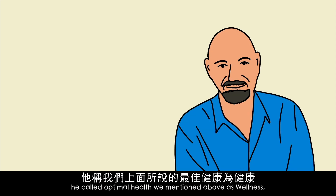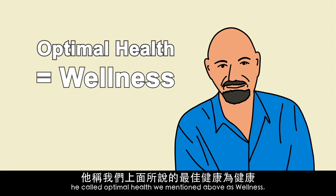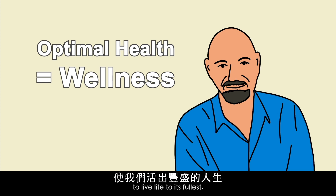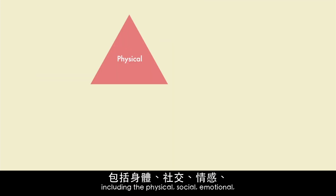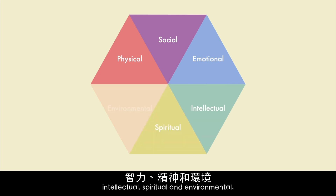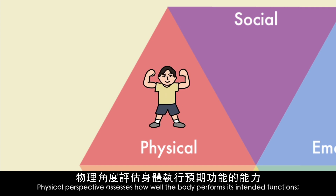According to Blona, he called optimal health as wellness — a state that comes with vigor, vitality, and ability to live life to its fullest. There are six dimensions when assessing wellness, including physical, social, emotional, intellectual, spiritual, and environmental. The physical perspective assesses how well the body performs its intended functions.